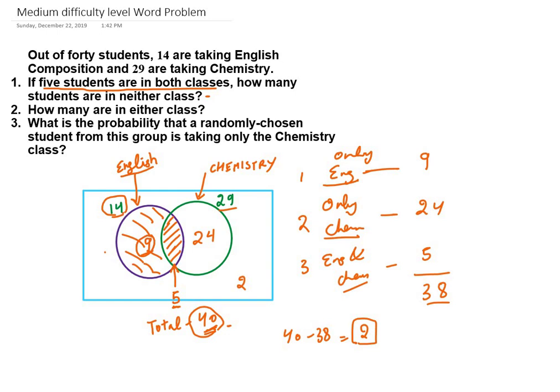They are in no class. So we have solved the first problem. Now the second problem is: how many are in either class? We already know that 9 are in English only, 24 are in Chemistry. We know the answer to the second problem as well.